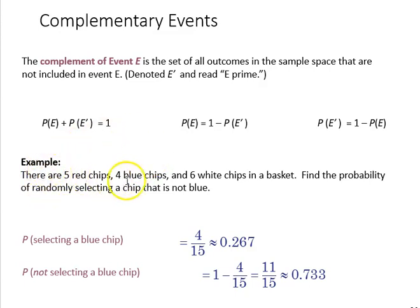The example here is chips. You have 5 red, 4 blue, and 6 white chips in a basket. The probability of selecting a chip that is not blue, well first we have to know the probability of selecting a blue chip, and we have to know the sample space, which is 15.